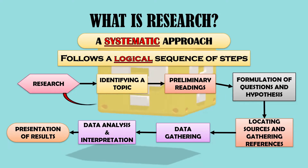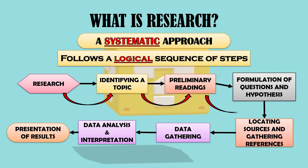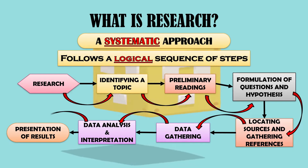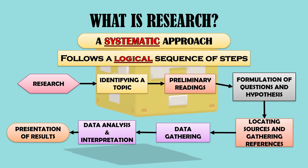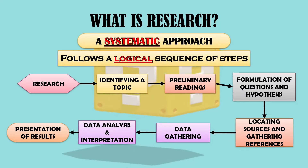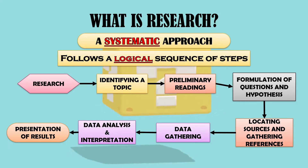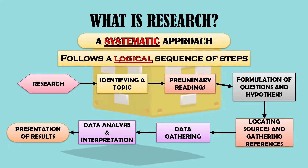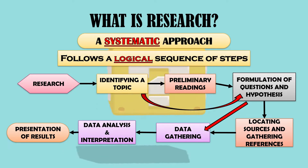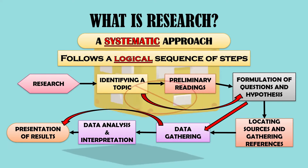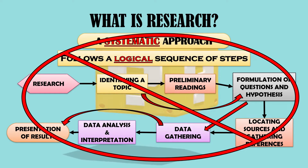For a research to be considered effective, a researcher must be able to follow each step accordingly. Following these steps would ensure that the results of the research are valid and reliable. The reason why it is described as a systematic approach is because it needs to follow each step accordingly. A research will not be considered valid or effective if a researcher fails to follow the steps and simply jumps from one process to another, as it only puts an issue on the validity and reliability of the results and findings.